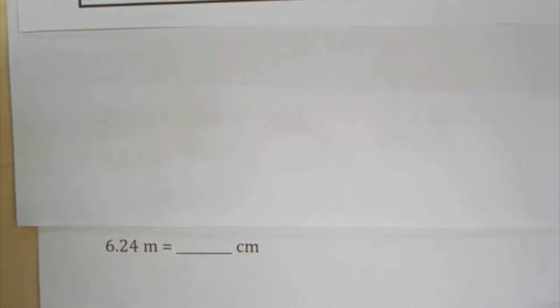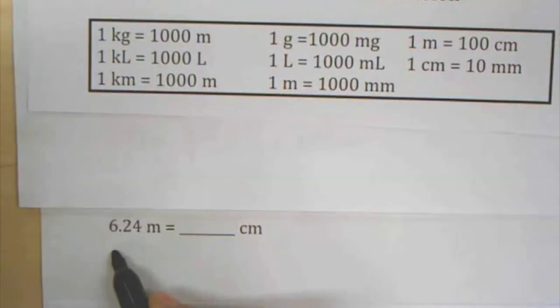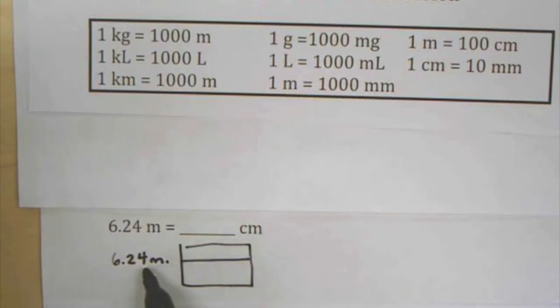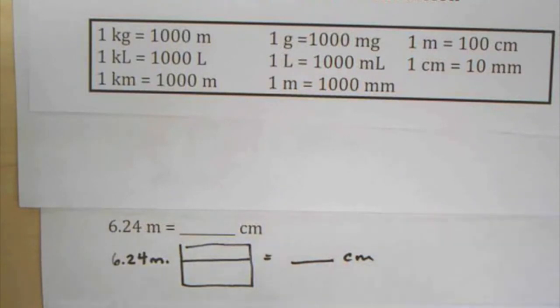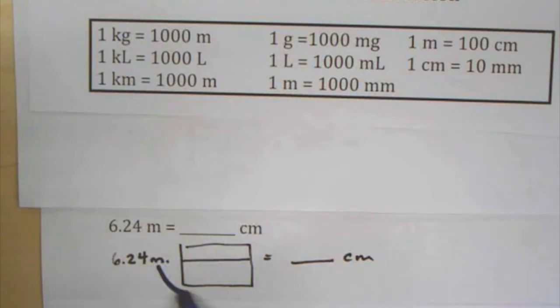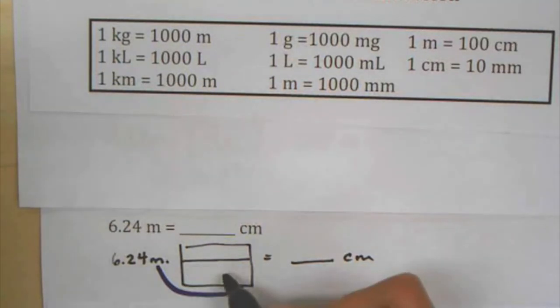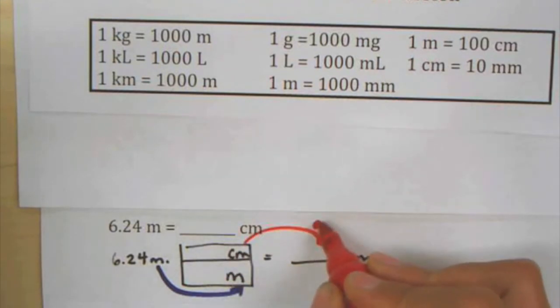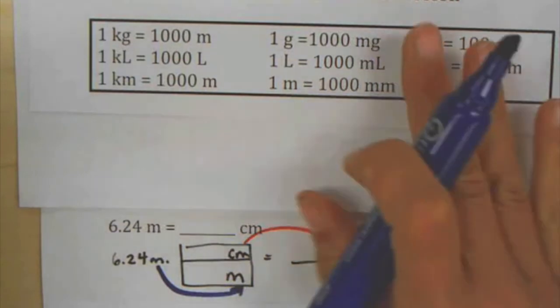Next problem: 2.3 meters — how many centimeters? You might want to pause and try to set it up yourself. I write down what I'm starting with, creating a pathway from where I'm starting to where I'm going: meters to centimeters. I set it up so I cancel the units I don't want — meters go in the denominator — and I introduce centimeters in the numerator.